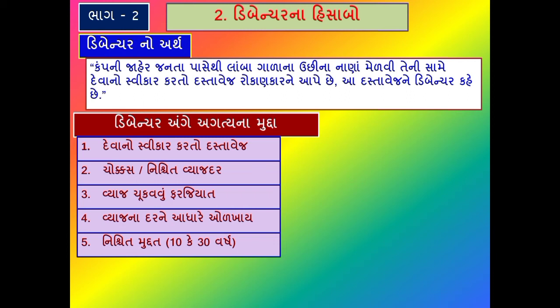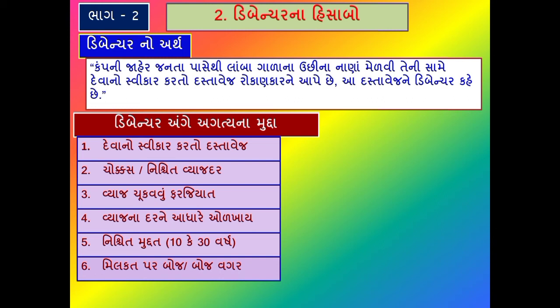ડિબેન્ચર પરત કરવાની નિશ્ચિત મુદ્દત હોય છે, મહત્તમ મુદ્દત દસ વર્ષ હોય છે. કંપની દ્વારા ડિબેન્ચર બહાર પાડતી વખતે મિલ્કત પર બોજ કે બોજ વગર - એટલે કે મિલ્કત ગીરવે રાખવી કે ન રાખવી - તે નક્કી કરી શકાય છે.